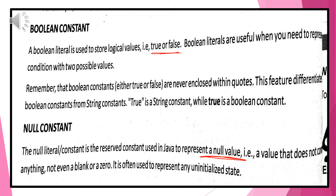Now, let us discuss the Boolean constant. Don't be confused with the Boolean word — when you learn the data type, you will learn what it means. Just remember: Boolean constant stores a logical value, that is true or false. When a certain condition has the possibility of a true or false value, you use the Boolean constant. Boolean constant values — true or false — are never enclosed within quotes, unlike character or string constants.